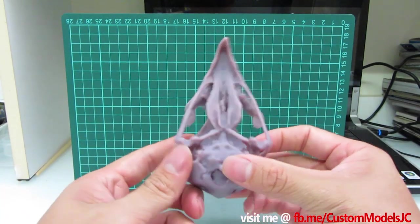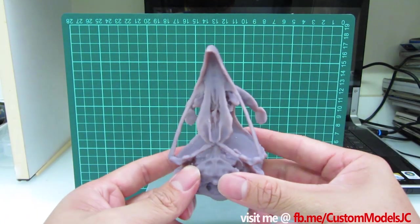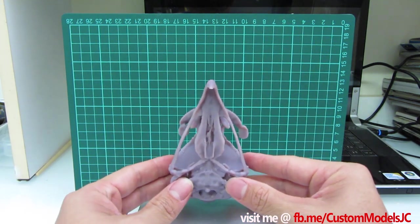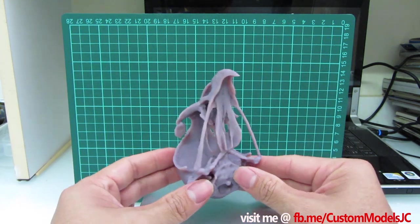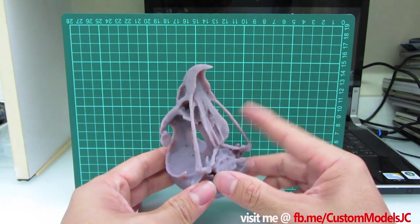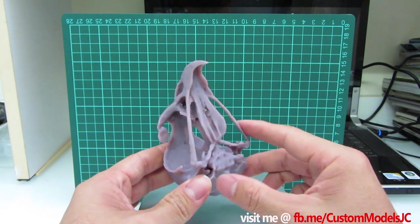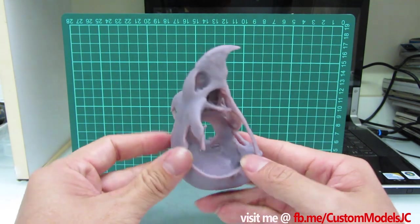So the supports did an amazing job. It was orientated like this, so all these little bones, very thin parts, came out pretty nice.